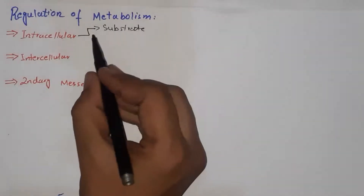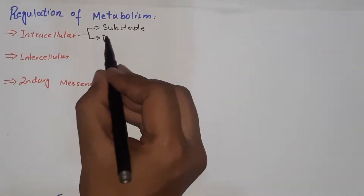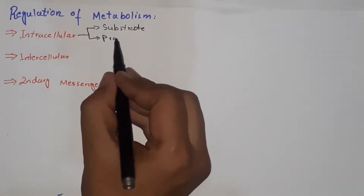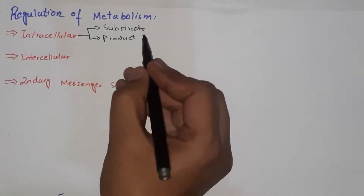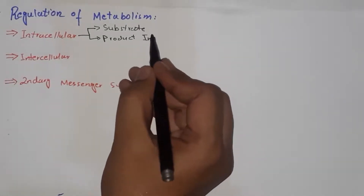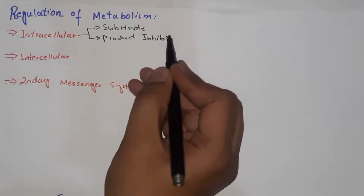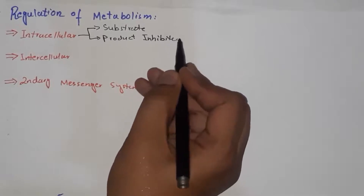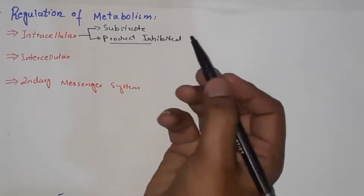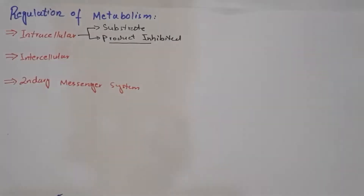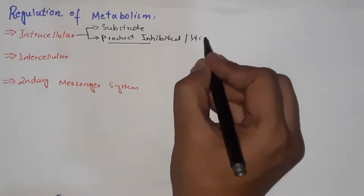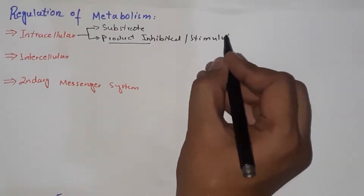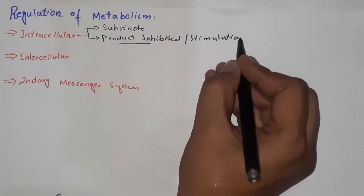Product inhibition also influences different metabolic reactions. Some reactions are inhibited by their products, and some are stimulated by their products. In this way, product inhibition or product stimulation also influences metabolic reactions within the cells. This is intracellular regulation.